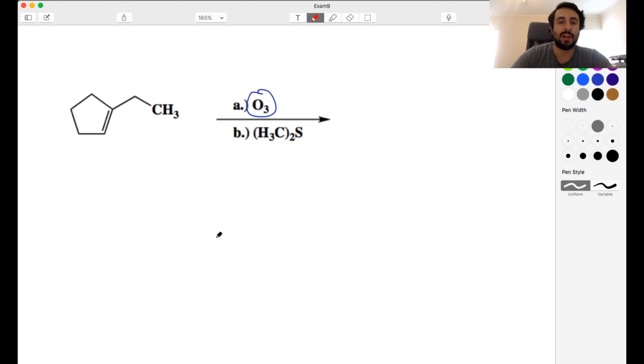So when we do ozonolysis, we know that we're going to cleave pi bonds. We're going to cleave that. And since we're going to be opening up this ring, let's go ahead and number our carbons: one, two, three, four, five, six, seven.